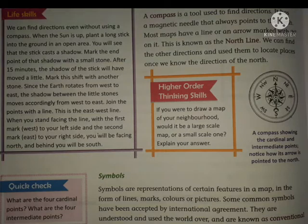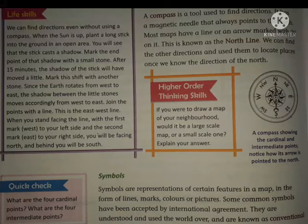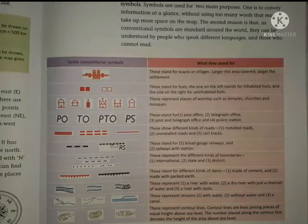Symbols are the representation of certain features on the map. We cannot show everything as it is in reality on a map, so we use symbols to mark features in a small figure or form to represent them. These symbols are used worldwide and are known as conventional symbols.